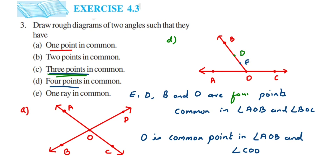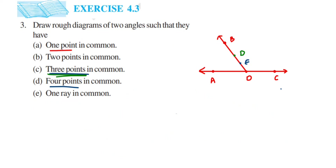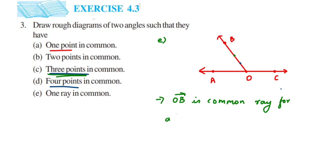The next question asks for one ray in common. Again the same figure applies. If you see angle AOB and angle BOC, ray OB is the common ray — it is the common arm for both angles. So the answer for part E also uses the same diagram; OB is the common ray for angle AOB and angle BOC.